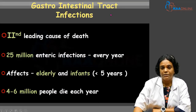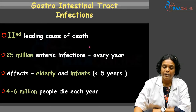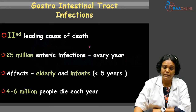Gastrointestinal tract infections are the second leading cause of death. Globally, 25 million people are infected with enteric infections every year. It mainly affects the extremes of age — elderly individuals and infants who are less than 5 years of age. And 4 to 6 million people die each year due to gastrointestinal tract infections.